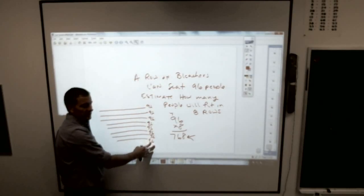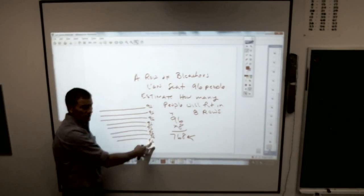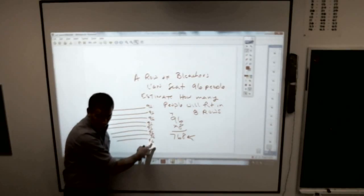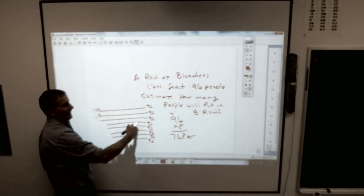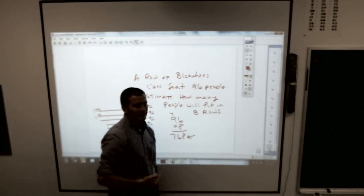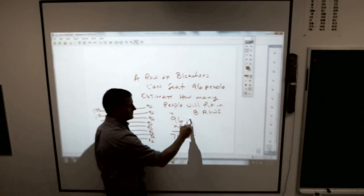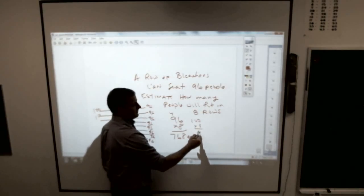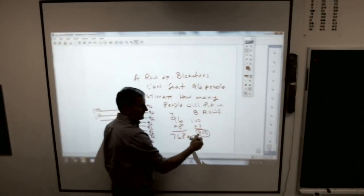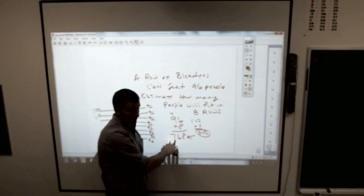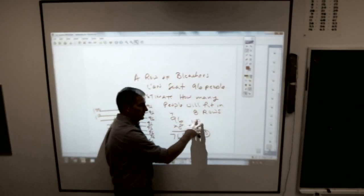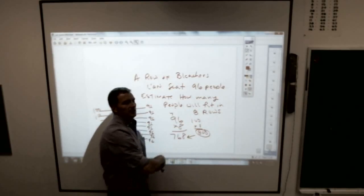You want to make these numbers easy to deal with. So instead of using 96, what easy number is 96 close to? Yeah, so you make all of these 100s, and you have eight 100s, which you can do pretty easily. 100 times eight is 800. This is the way to estimate. You want to do this to make your life easy.